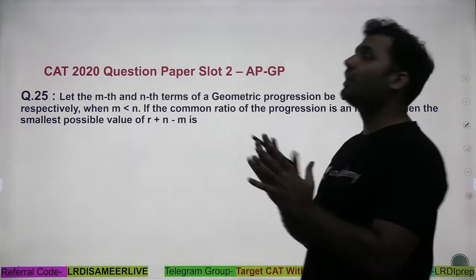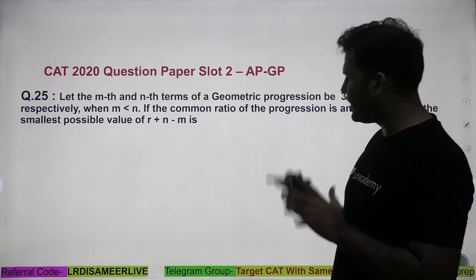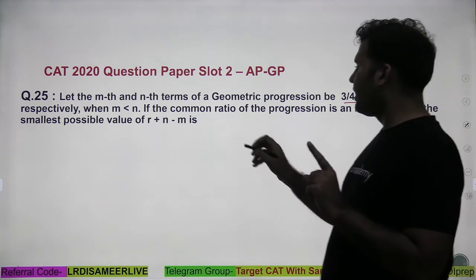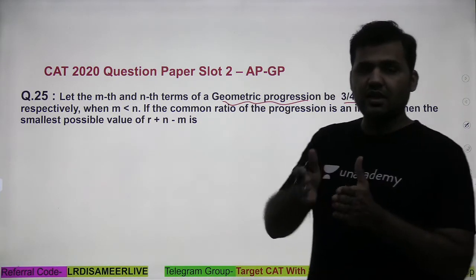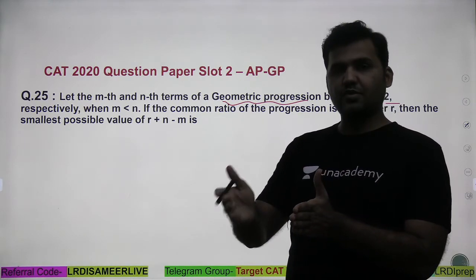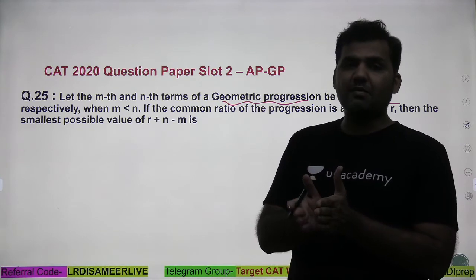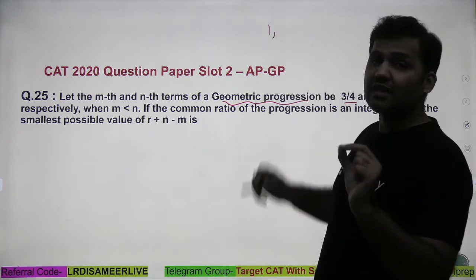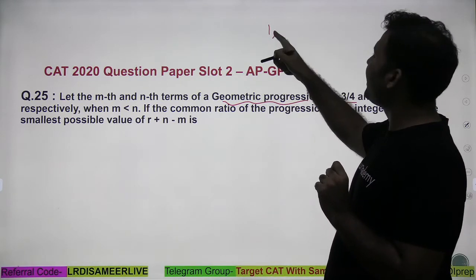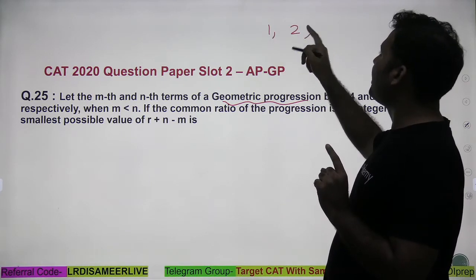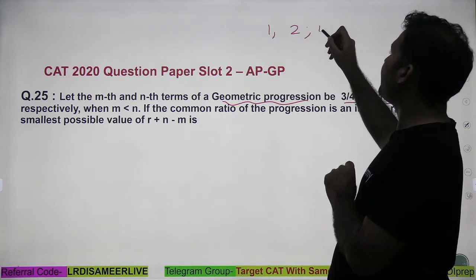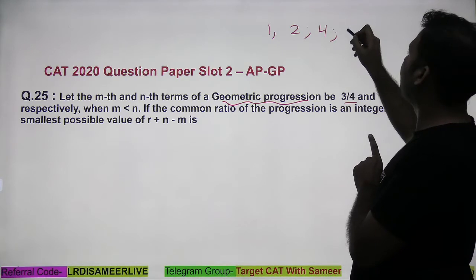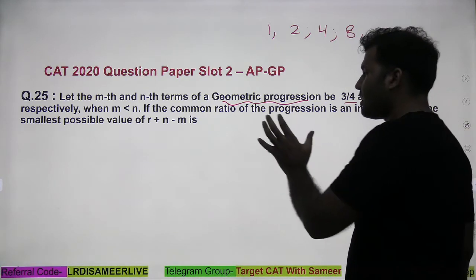Let's look at the next question, question number 25, from Arithmetic Progression and Geometric Progression — sequence and series. A geometric progression is a series where every subsequent term is obtained by multiplying the previous term by a constant ratio. For example, if the first term is 2 and the common ratio is 2, successive terms are 2, 4, 8, and so on.